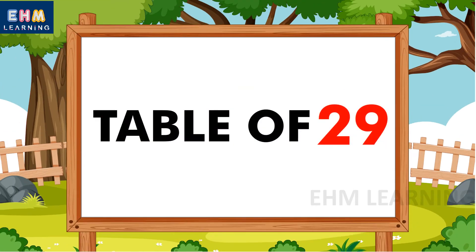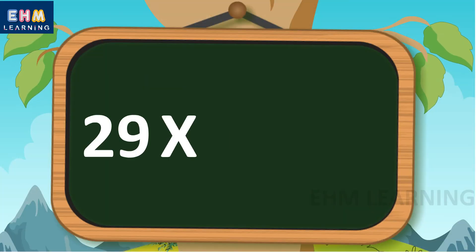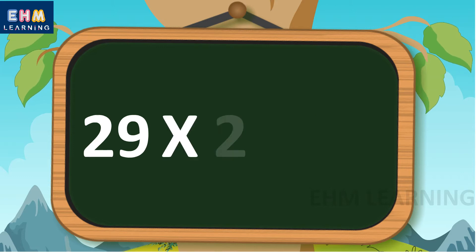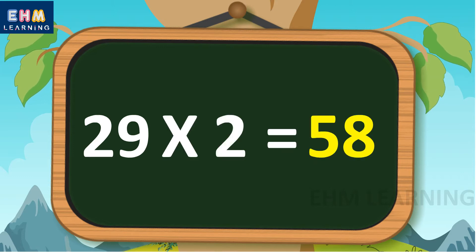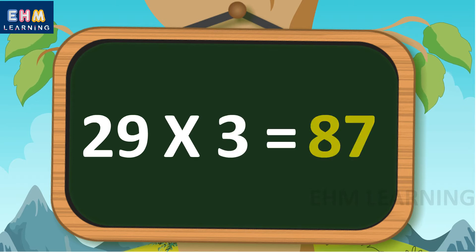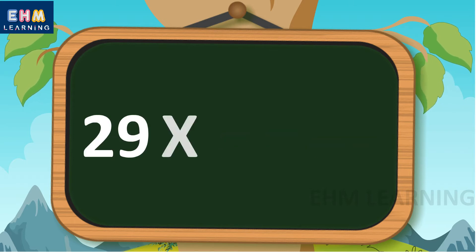Hello Children! Today we will learn the Table of 29. 29 1s are 29. 29 2s are 58. 29 3s are 87.